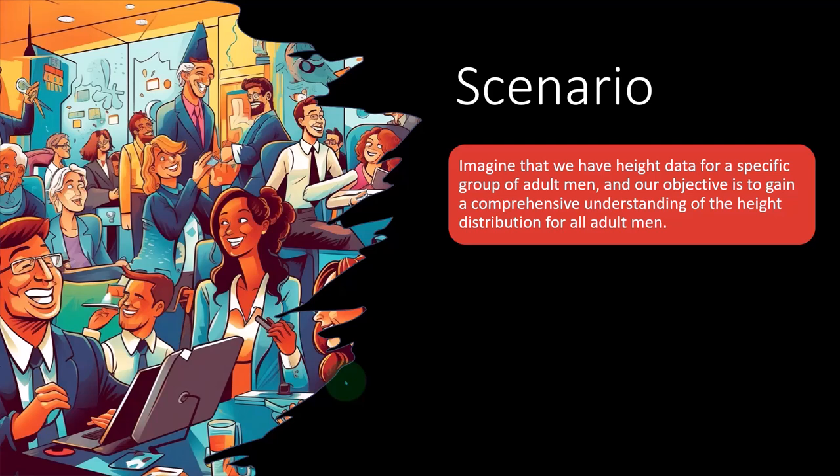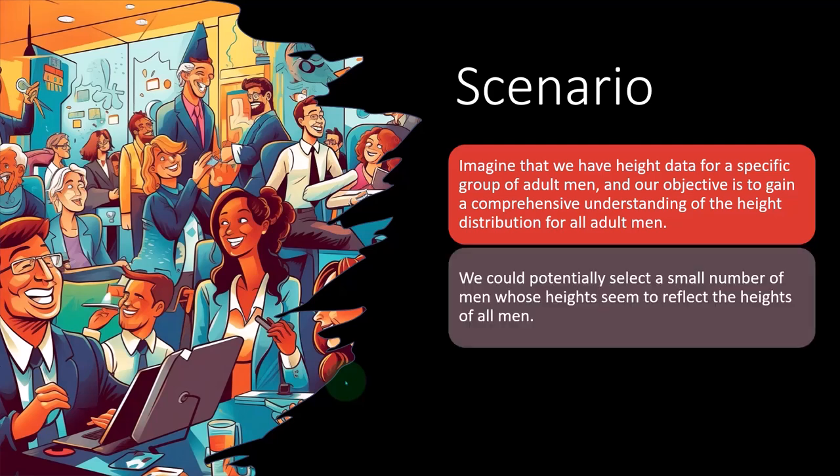So we could potentially select a small number of men whose heights seem to reflect the heights of all men. So you might say, hey look, if I was to take a sample, the question of course will then be, how am I going to take a sample of men? I can't test all men in the population to see what the average height of men are. But what I could do is take a sample. Well, how am I going to take the sample?